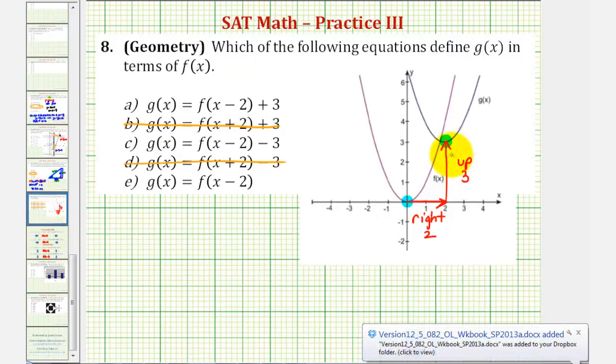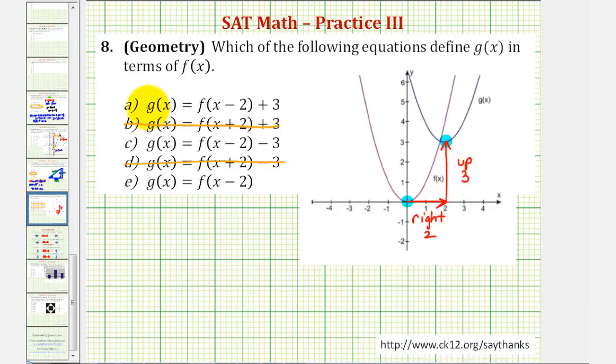Therefore, we would have to have our function plus three units. Therefore, looking at our choices, notice how a does have plus three on the end. So f of the quantity x minus two plus three would shift the graph right two units from the x minus two in the parentheses, and up three because of the plus three on the end. So our answer is a.